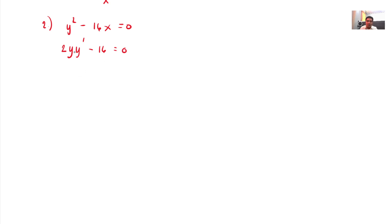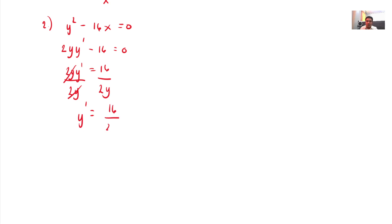We need y prime isolated on the left. Transpose 16 to the other side, it becomes positive 16. So 2y·y prime equals 16. Divide both sides by 2y. So y prime equals 16 all over 2y, or simplified, 8 all over y. That is your y prime.